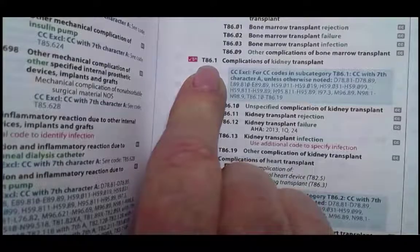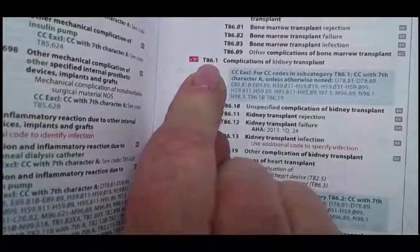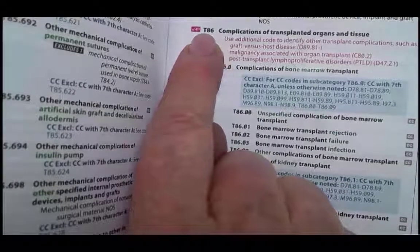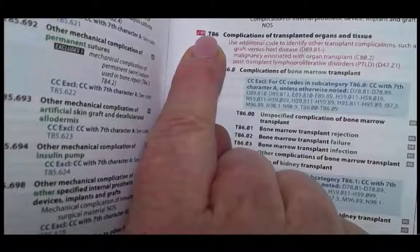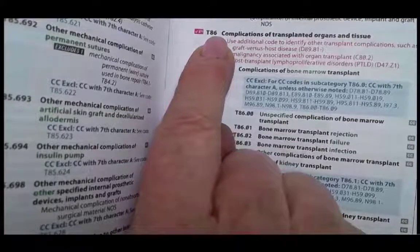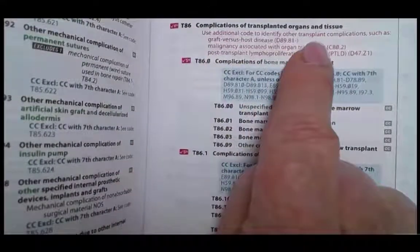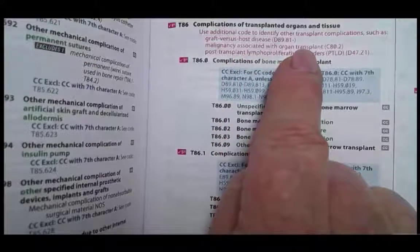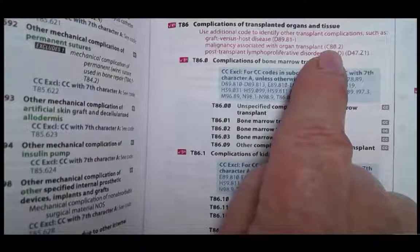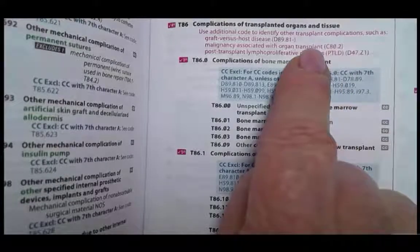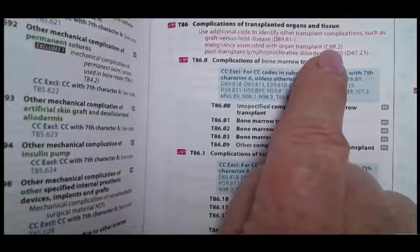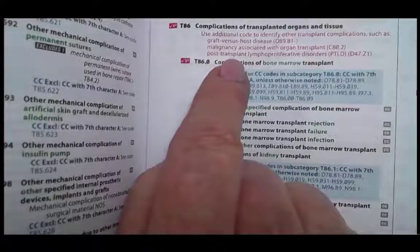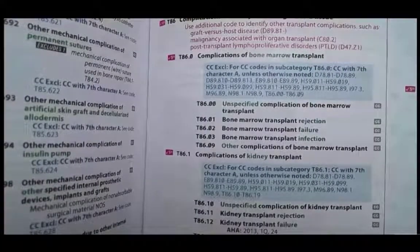One point I want to make is to look at the instructional notes with this category. You often want to go back to the beginning of the section rather than going straight to the code. This is a category code when you have three characters — the fourth character indicator tells you a minimum of four characters is required for a complete code. In this category, you're going to use additional codes to identify other complications such as graft-versus-host disease or a malignancy associated with the organ transplant — which is the case we're working on — and use C80.2. So not only do our guidelines tell us to use C80.2, but this instructional note also confirms it. You're always going to be reading above whatever code you're looking at to see if there are any instructional notes that apply.